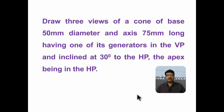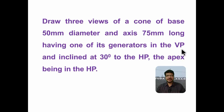In this video, I am going to explain a cone problem. The problem is: draw three views of a cone of base 50 mm diameter and axis 75 mm long, having one of its generators in the VP and inclined at 30 degrees to HP, the apex being in the HP.